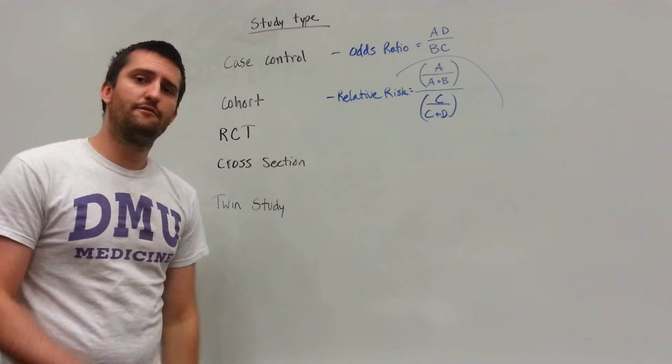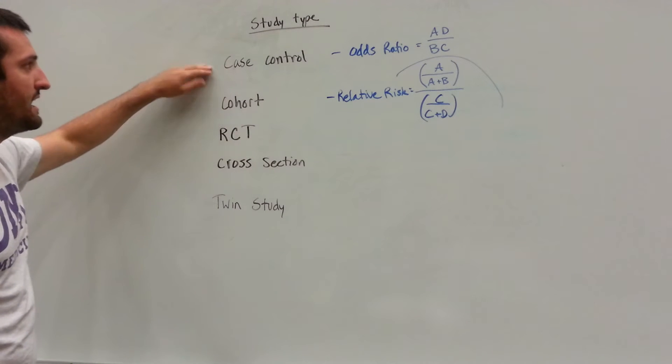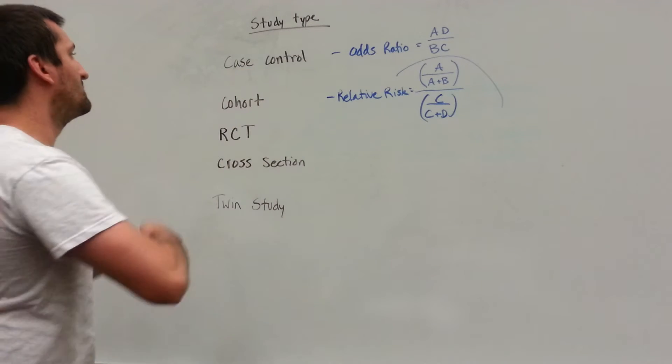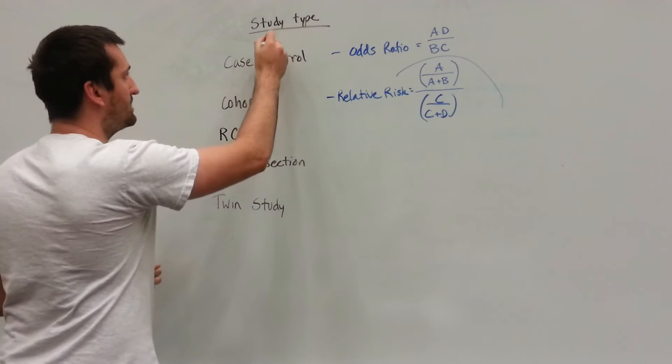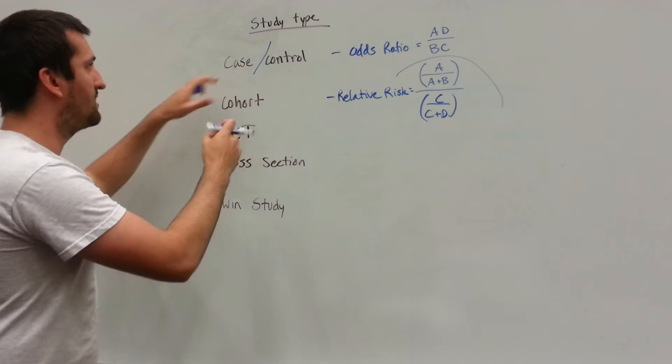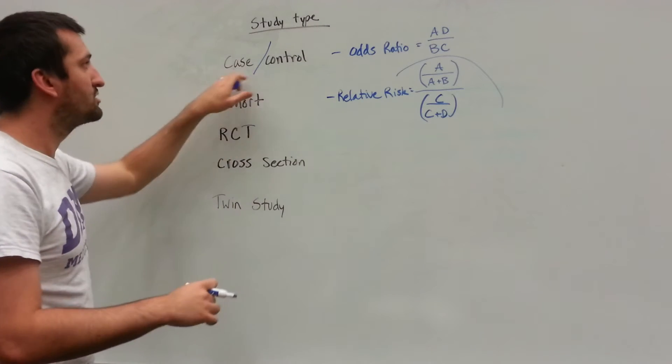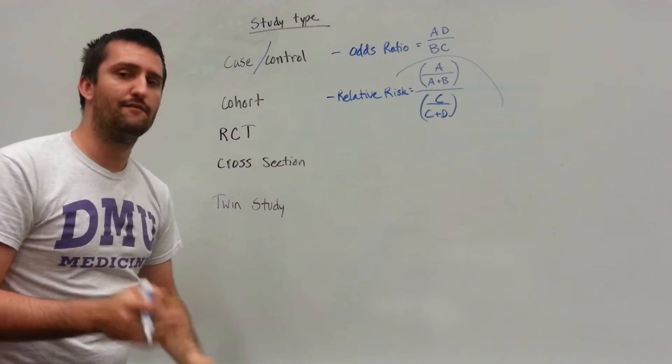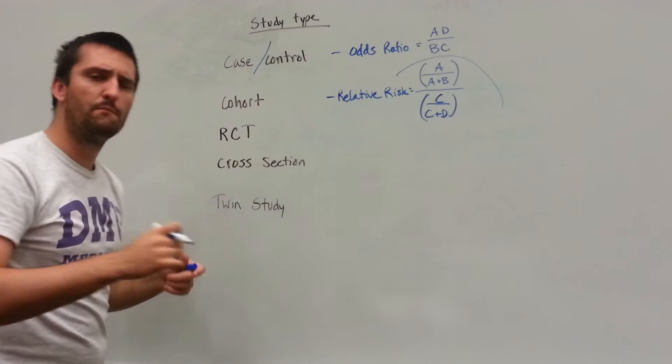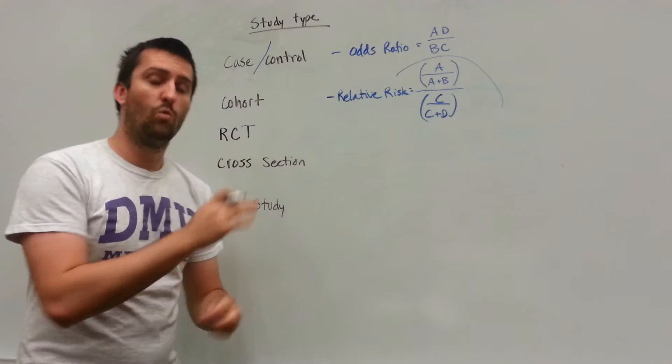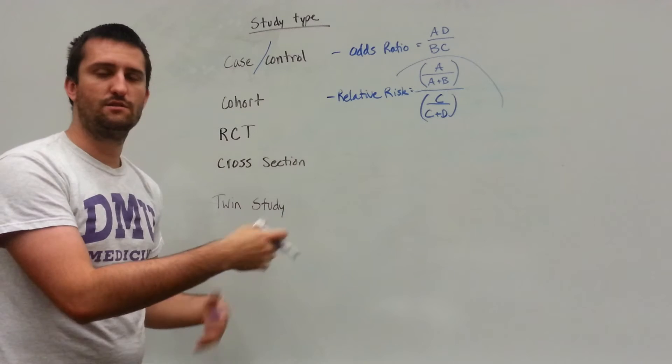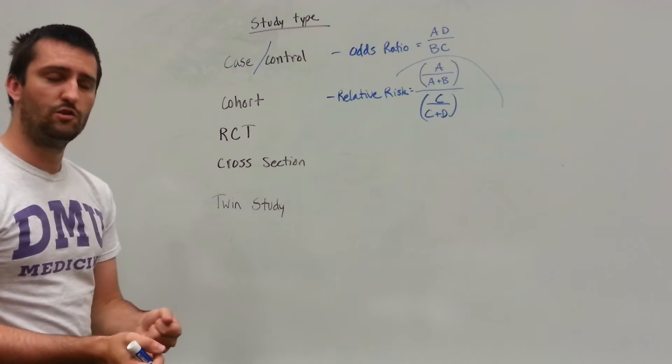So when studying for board exams, it's good to know what the difference between a case control versus a cohort study is. So a case control study, if I'm just going to make a little modification in this case and a control. So we're thinking you have a case, or let's say a case of diabetes and a control, meaning that control does not have diabetes, they're going to be healthy individuals. So you have a case and a control group. We're going to be comparing two different groups. One of those groups is going to have the disease of interest or the condition of interest. The other is going to be normal.